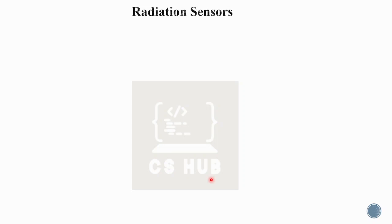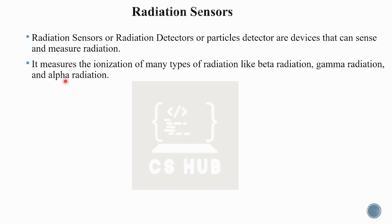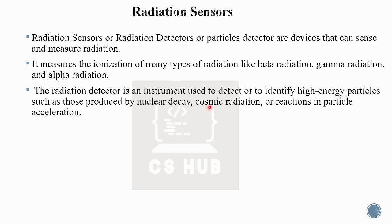Radiation sensors, or radiation detectors, or particle detectors, are devices that can sense and measure radiation. They measure the ionization of many types of radiation like beta, gamma, and alpha radiation. They are instruments used to detect or identify high-energy particles such as those produced by nuclear decay, cosmic radiation, or reactions in particle accelerators.